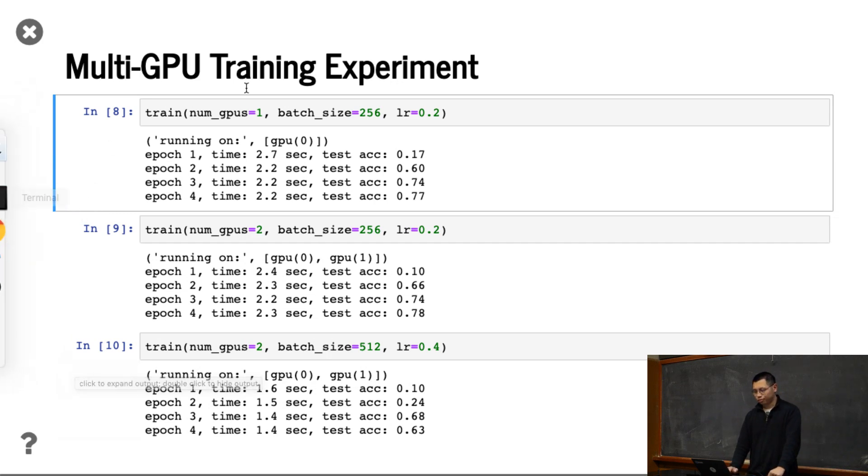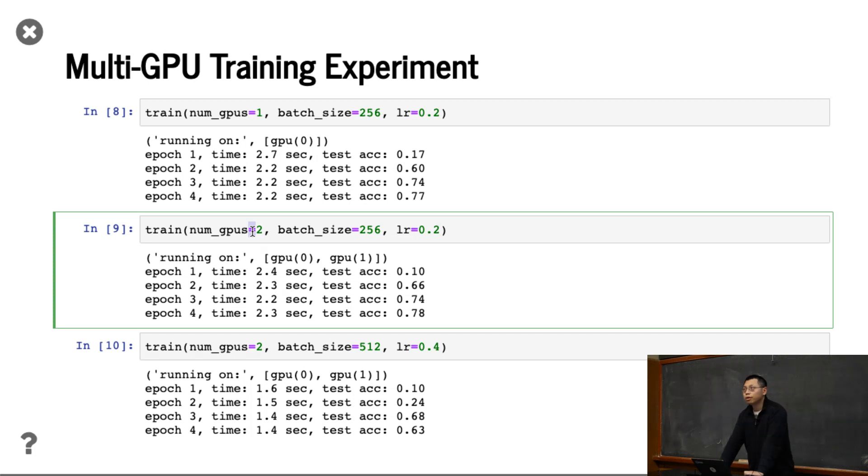Now we can try some results here. So firstly, we're using a single GPU. The batch size is 256, and the learning rate is equal to 0.2. You can see here, every epoch takes 2.2 seconds. The accuracy is like increase as well. Then we change to GPU, number of GPU equals 2. Because we fix the batch size, fix the learning rate, nothing has been changed, only change the number of GPUs, you get the same, almost the same accuracy as before. So you can first check the accuracy, pretty similar, because we randomize and initialize all the things, it's a little bit different. But you will not change the accuracy too much.